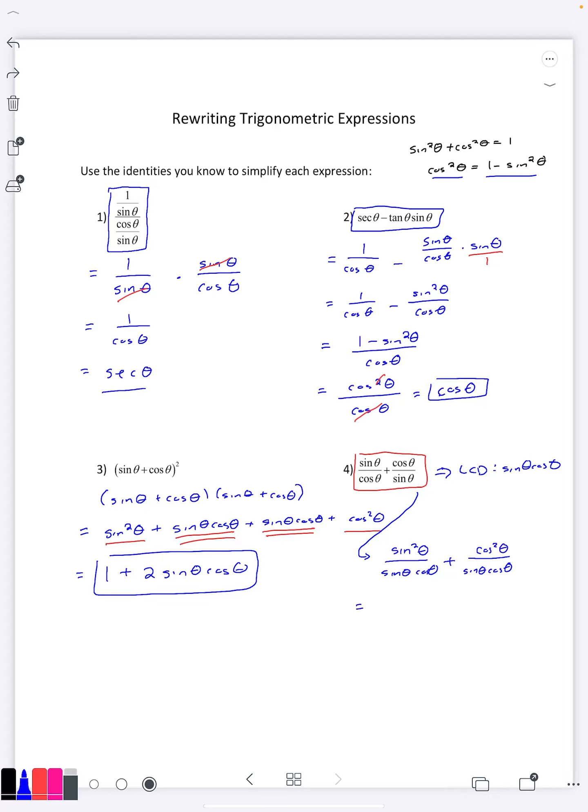Now that they have the same denominator we can add them. On top we get sine squared theta plus cosine squared theta over sine theta times cosine theta. Sine squared plus cosine squared by the most important identity is one.